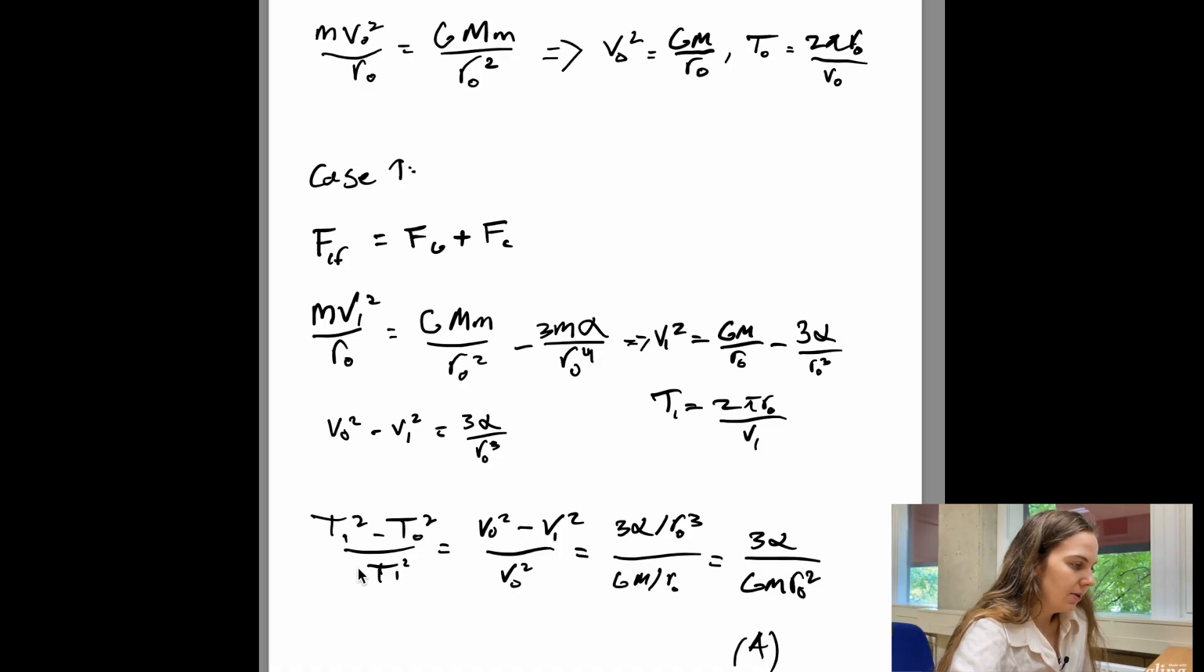And this makes our lives a lot easier because if we now look at the expression that we're supposed to work out in the problem, we get that this expression is just equal to v0 squared minus v1 squared over v0 squared. So if we now plug in the two expressions that we just worked out, we get that this is just 3 alpha over r0 to the power of 3 over G times capital M over r0, which is just 3 alpha over G times capital M times r0 to the power of 2. And if we look at the problem again, we see that this is just option A. So the answer to this question is A. I like this problem.